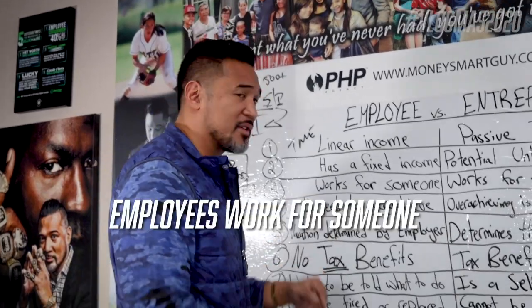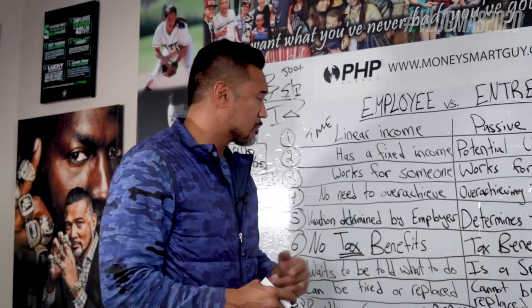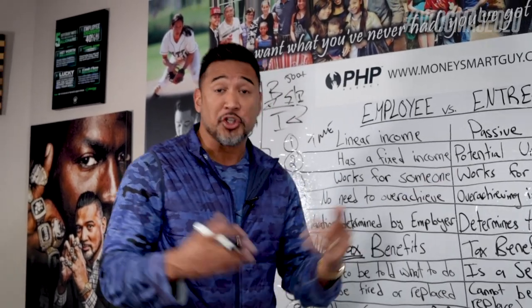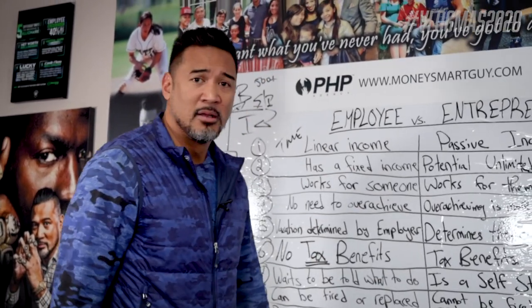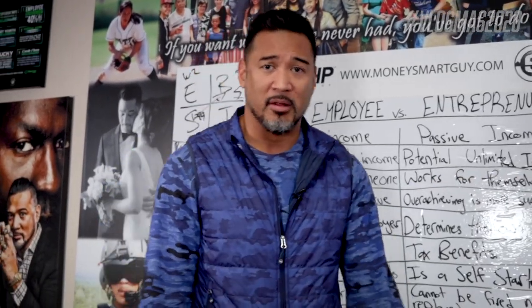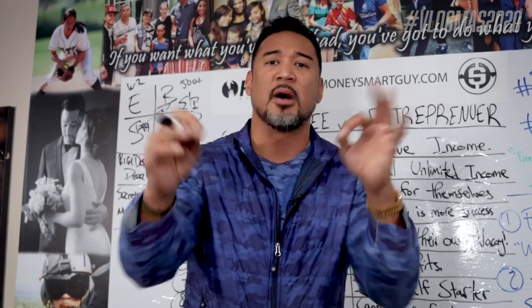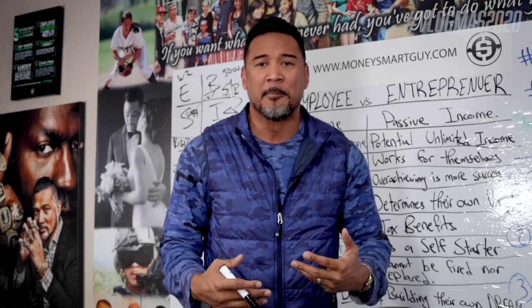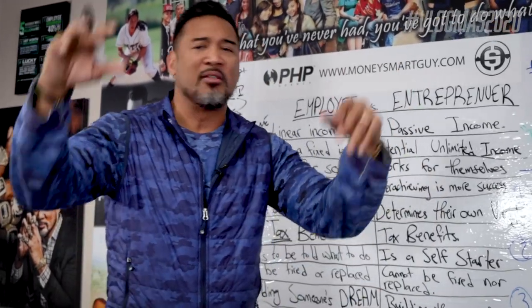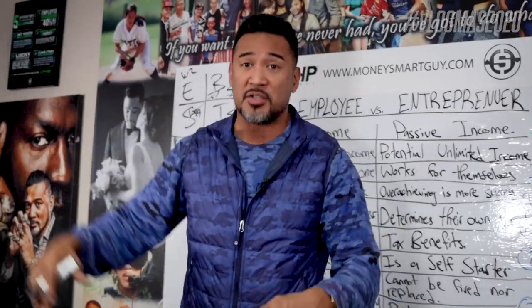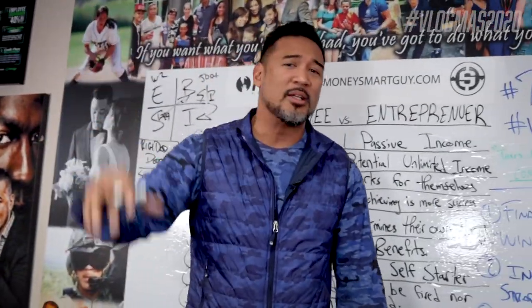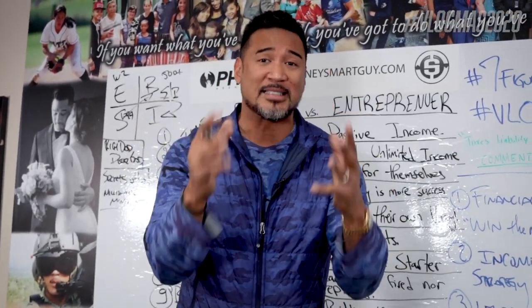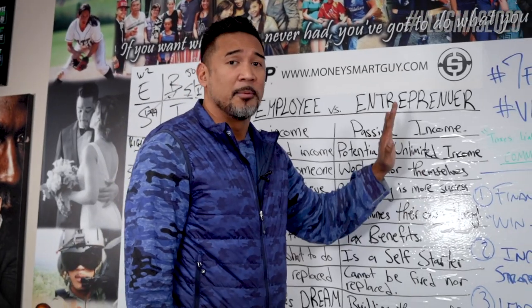Number three: an employee works for somebody — they got a boss, they report to somebody. An entrepreneur works for themselves. Just so you know, who's the worst boss to work for? Initially, it was myself. I was the worst to work for myself because I didn't know how to be a boss to myself. I'd get up whenever I wanted, make calls whenever, eat lunch whenever — multiple lunches, three- or four-hour lunch breaks. There was zero discipline working for myself as an early aspiring entrepreneur.